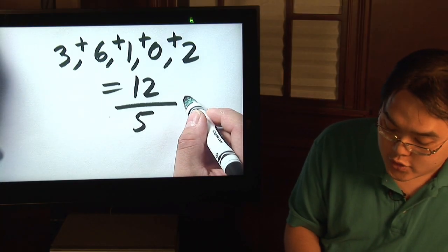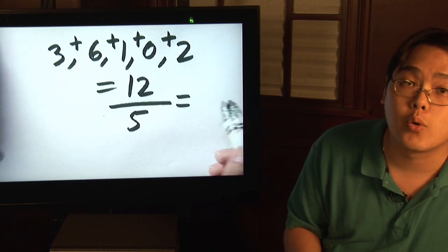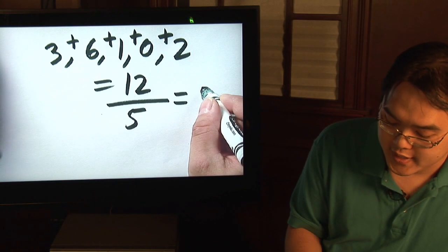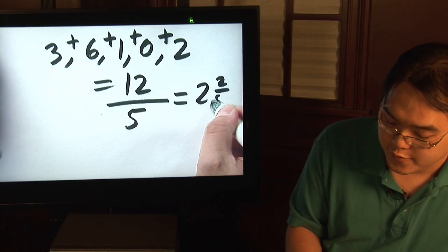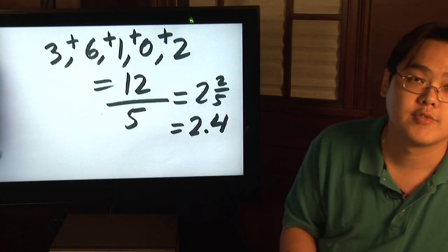12 over 5 is not really a reducible number, but if you calculate that on your calculator or do it by hand, you'll find out that it's 2 and 2 fifths, or you can write it in decimal form as 2.4.